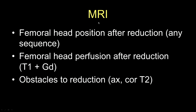For the most part, we've been talking about ultrasound, which is the mainstay of the evaluation of hip dysplasia. So when do we use MRI? The first indication is to look at the position of the femoral head after reduction in cases of severe hip dislocation — you can use any sequence, typically T2-weighted or proton-density-weighted images. You can also evaluate femoral head perfusion after reduction and placement in a spica cast, for which you need gadolinium. And MRI can be used to evaluate obstacles to reduction, which you can see on axial and coronal T2-weighted images.